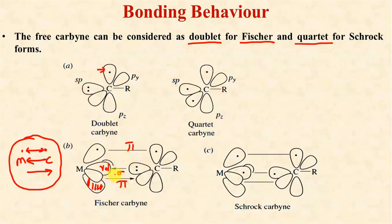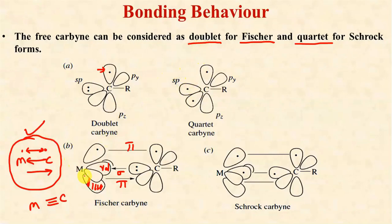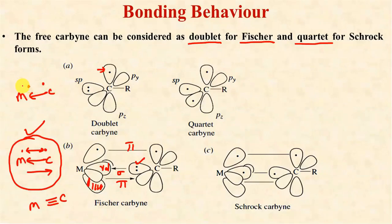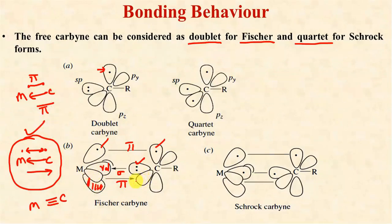Since we now have one sigma bond and two pi bonds, there are three bonds total between metal and carbon in these carbyne complexes. These are called Fisher carbynes when formed using the doublet carbyne with a metal. The metal-carbon sigma bond is formed by sharing of the highest occupied molecular orbital of carbon with vacant d orbitals of metal. One pi bond is formed by overlapping of a half-filled d orbital with a half-filled p orbital of carbon, and the second pi bond is formed by overlapping of the filled d orbital of metal with the vacant 2p orbital of carbon.